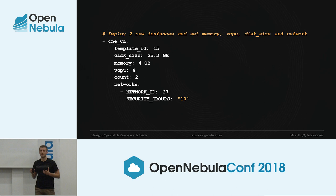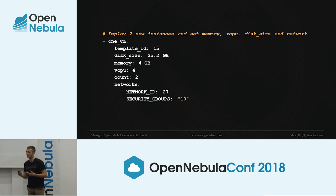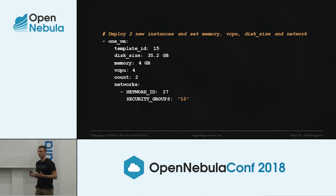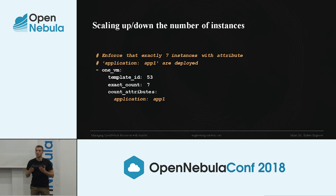Unlike dedicated servers we used before OpenNebula, OpenNebula allows us to have dynamic infrastructure — meaning we can easily scale the number of instances in production, either creating new instances during burst periods or terminating surplus ones. We wanted to take advantage of this as much as possible. With the one_vm module, we provided a special parameter called exact_count, which we can use to scale up and down the number of instances based on attribute and/or label criteria. Here's an example of how we can enforce that exactly seven instances with a given application attribute are deployed — either new ones are deployed or surplus ones are destroyed.